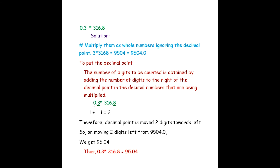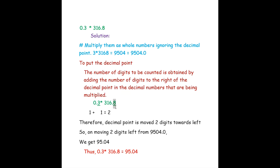To place the decimal point: in 0.3 there is one digit to the right of the decimal point, and in 316.8 there is also one digit — so 1 plus 1 gives two digits. Moving two digits towards the left from 9504.0 gives us 95.04. Thus 0.3 into 316.8 is 95.04.